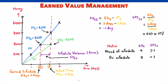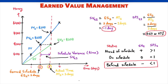Finally, when earned schedule is less than actual time, the project is behind schedule: schedule variance is negative and SPI is less than 1. In our example, schedule variance is negative, minus 1 day; SPI is 0.67, less than 1 — we are clearly behind schedule. By how much? We are behind schedule by exactly 1 day. In relative terms, we are 1 minus 0.67, or 33 percent, behind schedule.